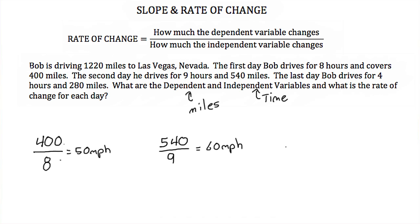Lastly, Bob covers 280 miles on the last day, and he does that in 4 hours. So in those 4 hours, Bob has been driving 70 miles per hour.